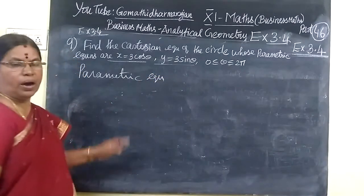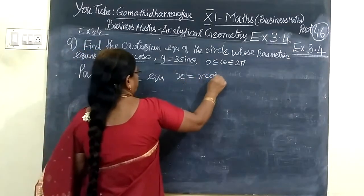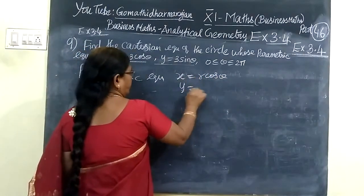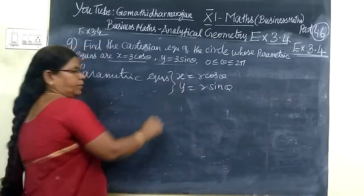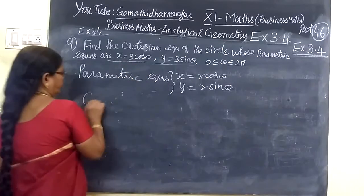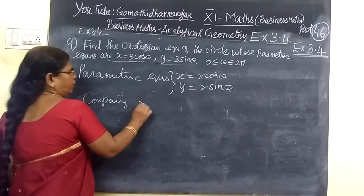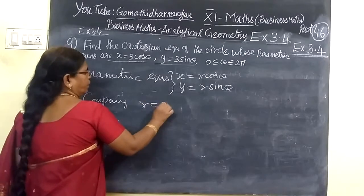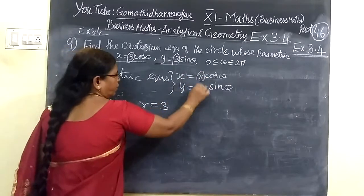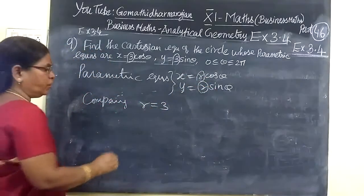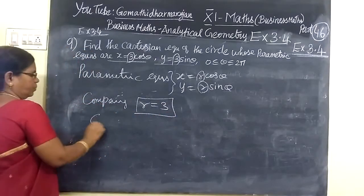Parametric equation has variable r and theta. X equals r cos theta, then Y equals r sin theta. This is the parametric equation. The question says r = 3. Then if r has value of 3, then it gives the equation.